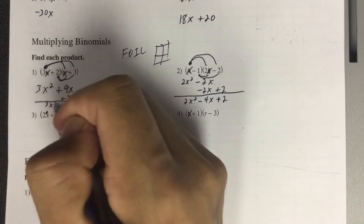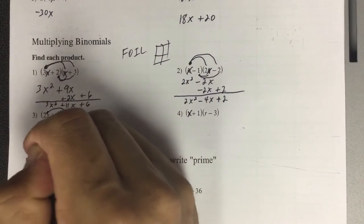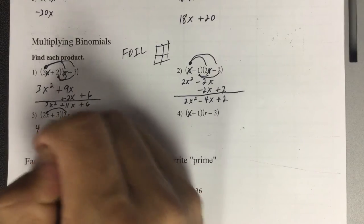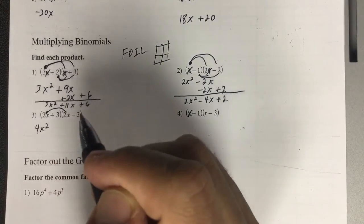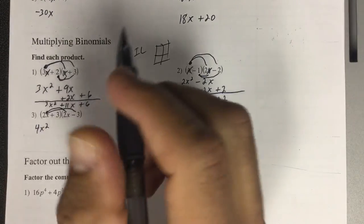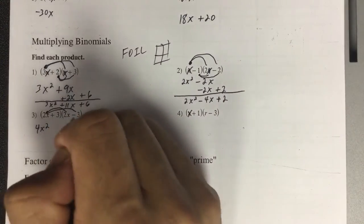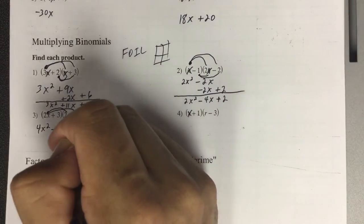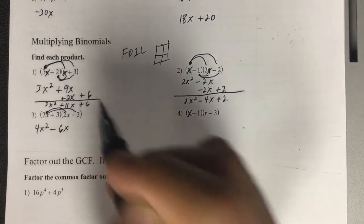If I have 2x times 2x is 4. So 2 times 2 is 4. x times x is x squared. 2x times negative 3, positive times a negative is negative. 2 times 3 is 6. And I still have x.